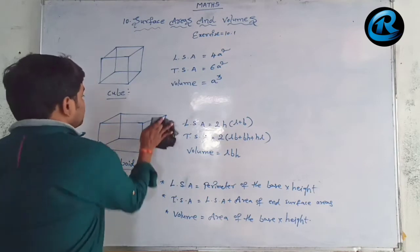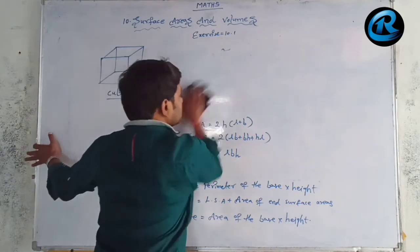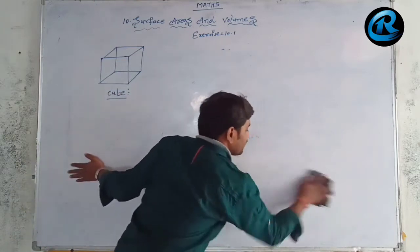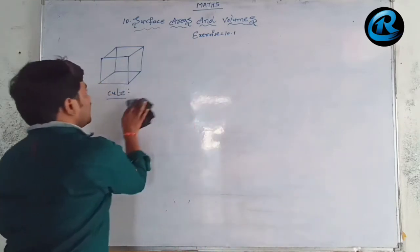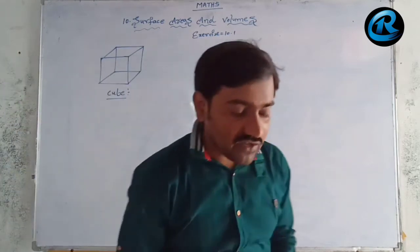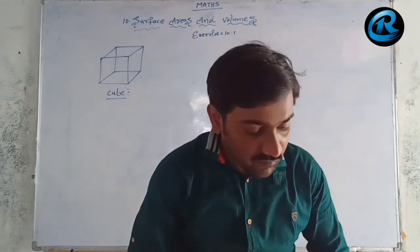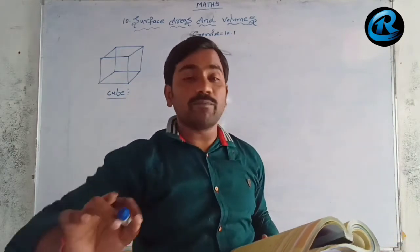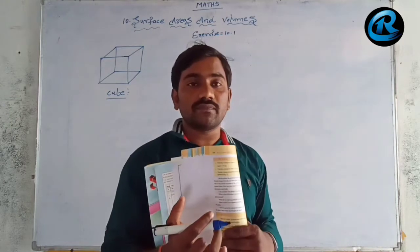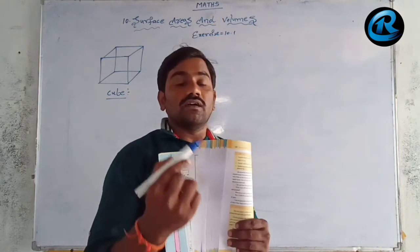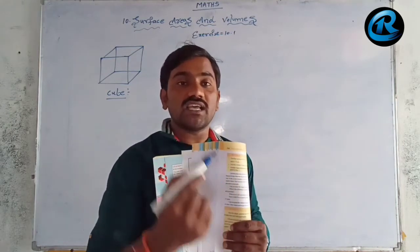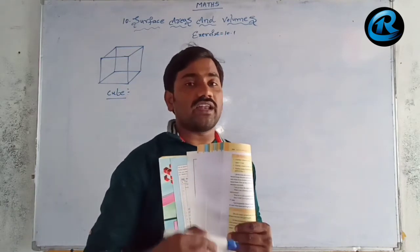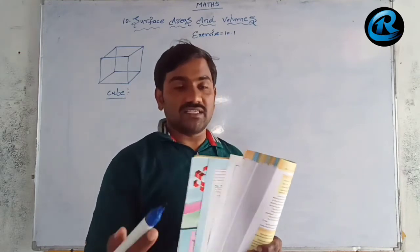Now let us go for the exercise problems. We will solve all the problems from the exercise. The first question asks us to find the lateral surface area and total surface area of the following right prisms. Right prisms have a regular polygon as the base and the remaining lateral surfaces are parallelograms or rectangles.